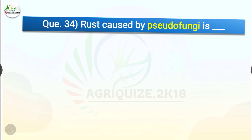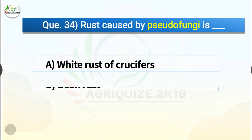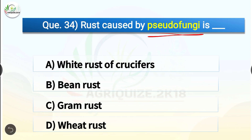Question number thirty-four: Rust caused by pseudofungi is dash. The options are white rust of crucifers, bean rust, gram rust, or wheat rust. The correct answer is option A, white rust of crucifers. Rust caused by pseudofungi is white rust of crucifers. Question number thirty-five: Plant pathogen used in horizontal gene transfer is dash. The options are Agrobacterium, Pseudomonas, Streptomyces, or Erwinia. The correct answer is option A, Agrobacterium.